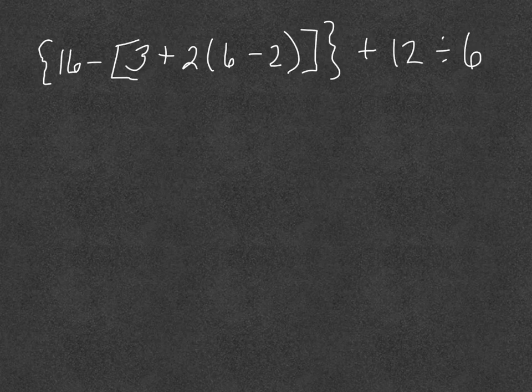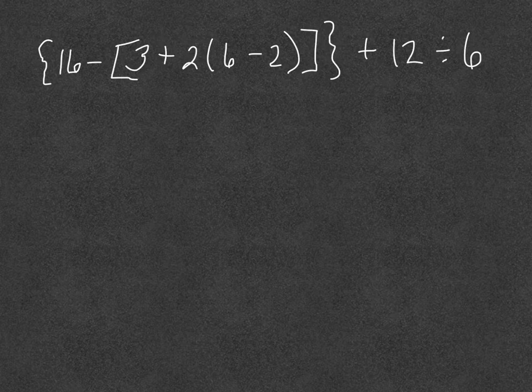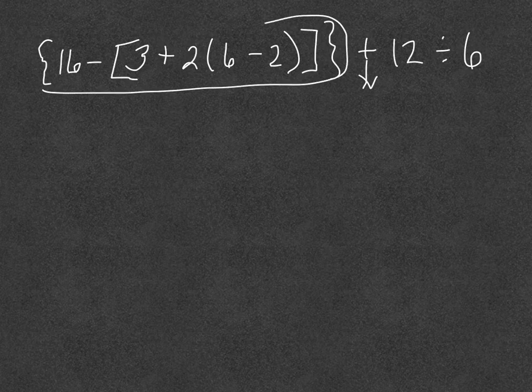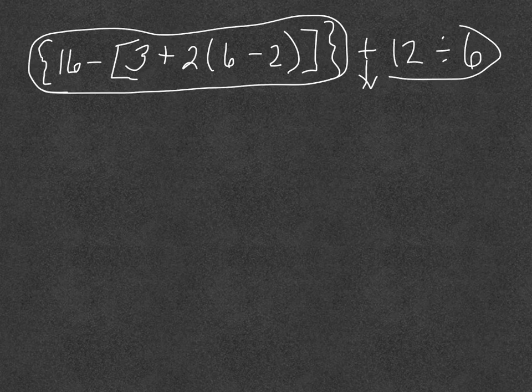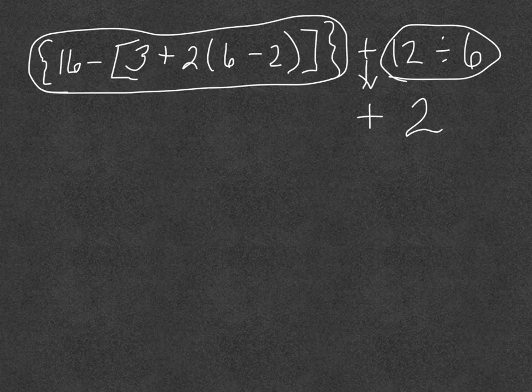All right let's try one more before you do some on your own. This expression has one term that has parentheses, brackets, and braces and then another term that's just simply a division problem. So I'm going to put my stop sign in. Remember you don't put stop signs anywhere inside parentheses, brackets, or braces. So this whole thing is one term. And then we have a term over here. I bring my addition sign down. I'm just going to do 12 divided by 6 is 2. Get that out of the way.